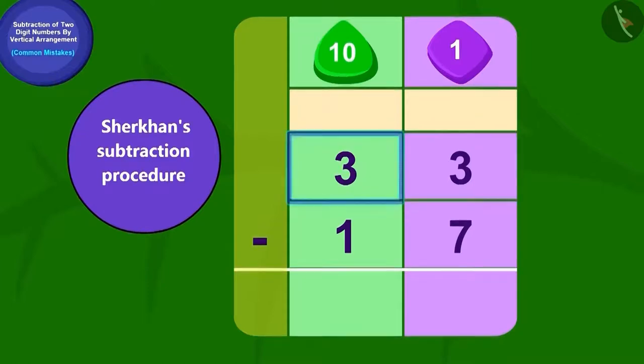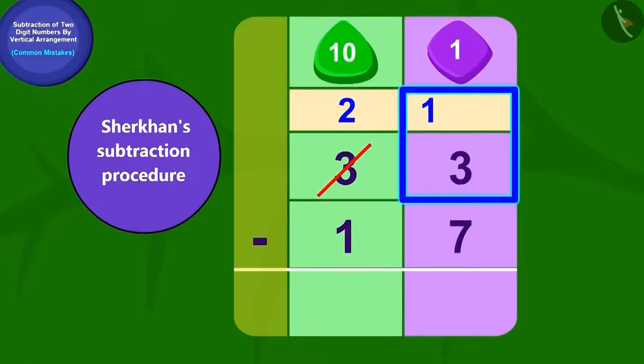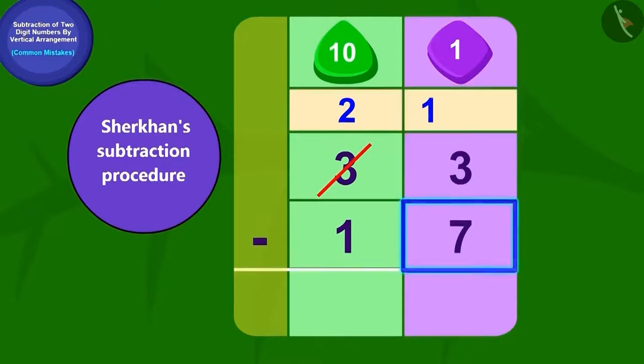Yes. We will have to borrow one tenth from three tenths of 33. Now how many ones do we have? Thirteen ones. Now this is very easy. If we remove seven ones out of thirteen ones, then we have six ones left. And by removing one tenths from two tenths, we will be left with one tenths. Sher Khan has also written his answer like this.